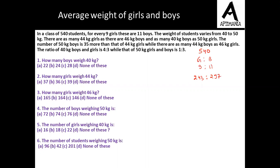Further, the weight of students varies from 40 to 50 kg. There are as many 44 kg girls as there are 46 kg boys. So here we have two weights, 44 kg and 46 kg. So let me write it down here. The number of girls of 44 kg is x, so number of boys of 46 kg is x.